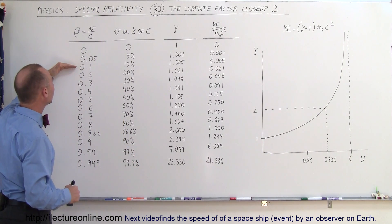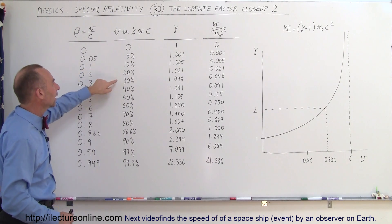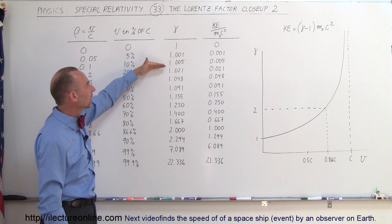As the velocity of the object increases to 0.1, 0.2, 0.3, which is 10, 20, 30% of the speed of light, notice that the Lorentz Factor begins to grow.